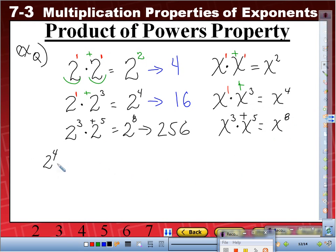2 to the 4th times x cubed times 2 times x to the 8th. Okay, let's do this one together. Do you see that we can use the commutative property and then associative property? If you don't see it, check this out. I'm going to move this one here and this one there.